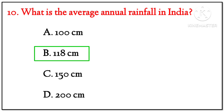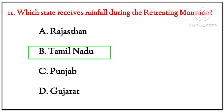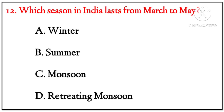(11) Which state receives rainfall during the retreating monsoon? Options: Rajasthan, Tamil Nadu, Punjab, Gujarat. Answer: Tamil Nadu — 50% of annual rainfall during retreating monsoon. (12) Which season in India lasts from March to May? Options: Winter, Summer, Monsoon, Retreating Monsoon. Answer: Summer.